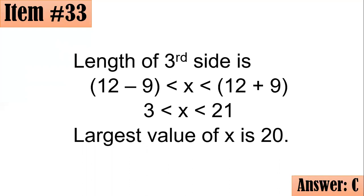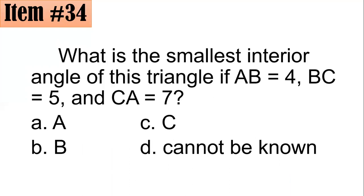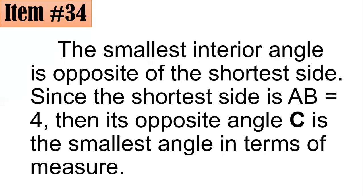Next number, 34. What is the smallest interior angle of this triangle if side AB is 4, side BC is 5, and side CA is 7? Is it A, B, C, or it cannot be known? What do you think? If you could still recall your hinge theorem or the inverse of this theorem, you could actually see or realize that the smallest interior angle is opposite of the shortest side. Since the shortest side is AB, which has a length of 4, then its opposite angle C should also be the smallest angle in terms of measure. Hence, letter C is the correct answer.